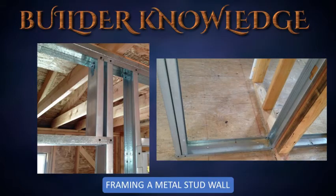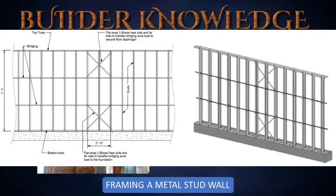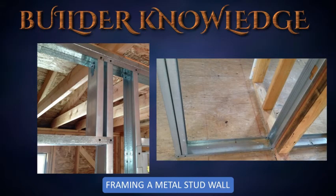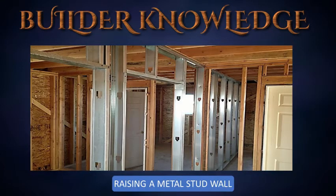Diagonal braces or tension straps are used to brace studs against lateral movement. Attach diagonal and horizontal bracing to the wall studs, especially at door openings. Reminder: studs used for interior walls are commonly used for diagonal bracing.